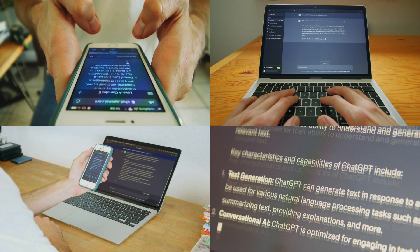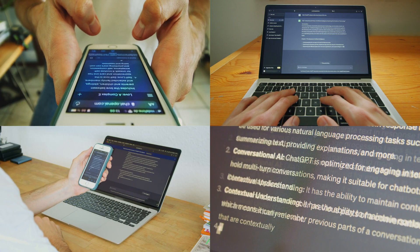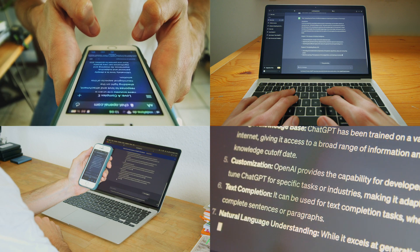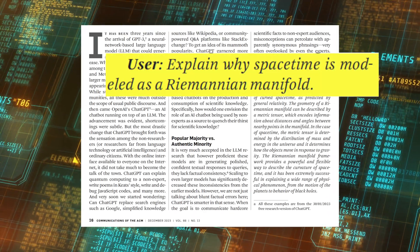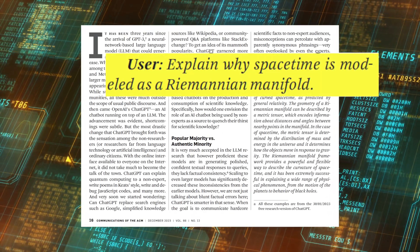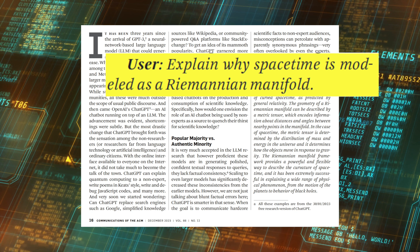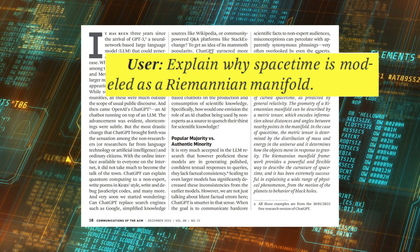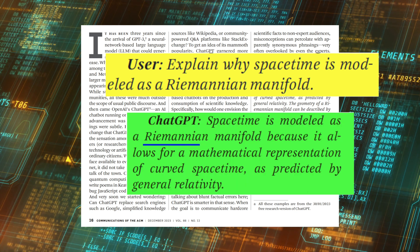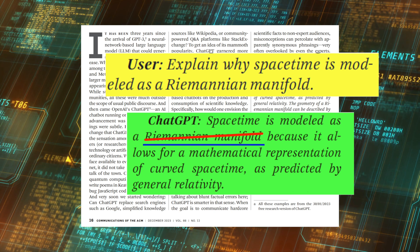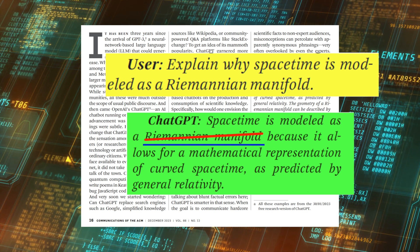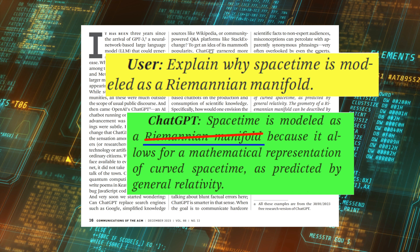So what would be an example of ChatGPT giving an incorrect answer that seems correct? When we ask whether spacetime is modeled using a Riemannian manifold or not, ChatGPT quite confidently answered that it is a Riemannian manifold. But that answer is actually wrong — spacetime is always modeled using a Lorentzian manifold.